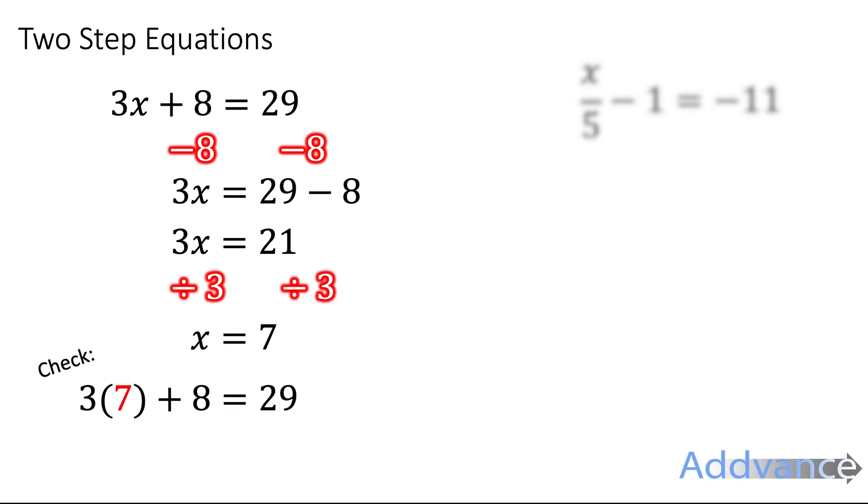I can check this by just putting 7 back into the original equation. And instead of the x, 3 times 7 is 21 plus 8 is 29. And it looks like it makes sense to me.